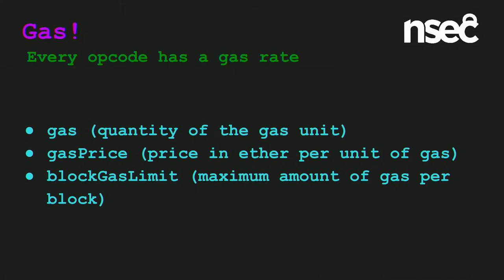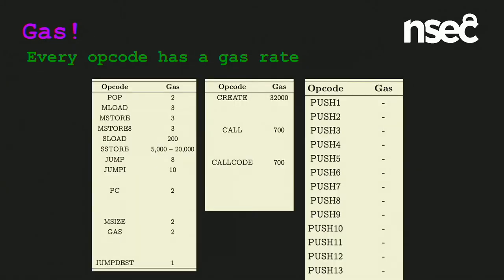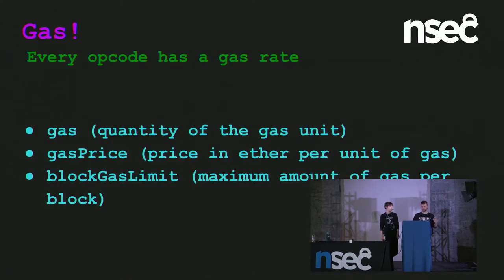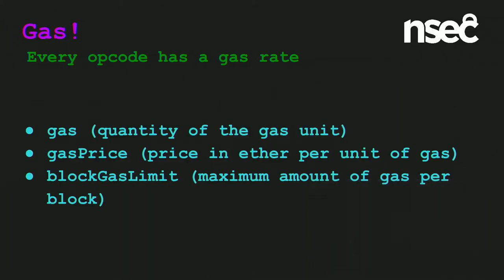Every opcode has a gas rate — the gas column is the cost of that operation. This is essentially meant to meter the amount of computation your contract is doing. You can provide a certain amount of gas when you create a transaction. If that gas runs out, the transaction will be undone, you lose all your gas, but no state change will actually occur. This is essentially a spam prevention technique. Gas is the unit; gas price is how much you pay per unit of computation. Each block has a limited amount of gas that can be spent within it, to contain how much computation is done in any given block.